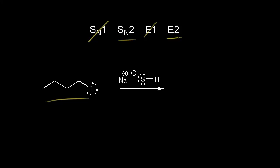An E2 mechanism is possible, and an SN2 reaction is possible because of the decreased steric hindrance of our primary alkyl halide. So now the next step is to look at our reagent. For this reaction, we have a sulfur nucleophile, which we know is going to act only as a nucleophile and not as a base. Since it's going to act as a nucleophile, E2 is out — we need a strong base for E2. So this must be an SN2 mechanism, which is a concerted mechanism.